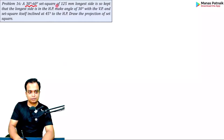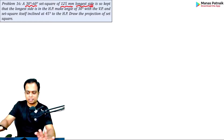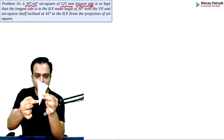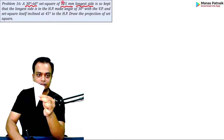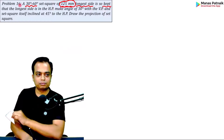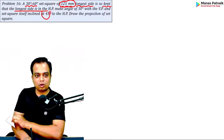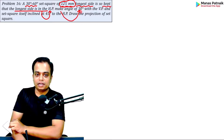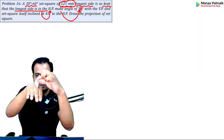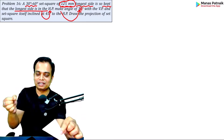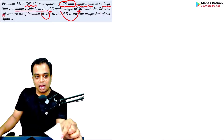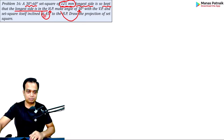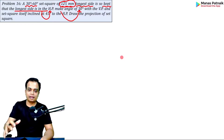This is a 30-60 set square with a longest edge of 125 millimeters. It is placed so that the longest side is always in contact with the horizontal plane. The longest edge makes an angle of 30 degrees with the VP. Additionally, the set square surface itself is inclined at 45 degrees to the HP. So many data points in the first sentence — surface is inclined, edge is also inclined, and dimensions are given.